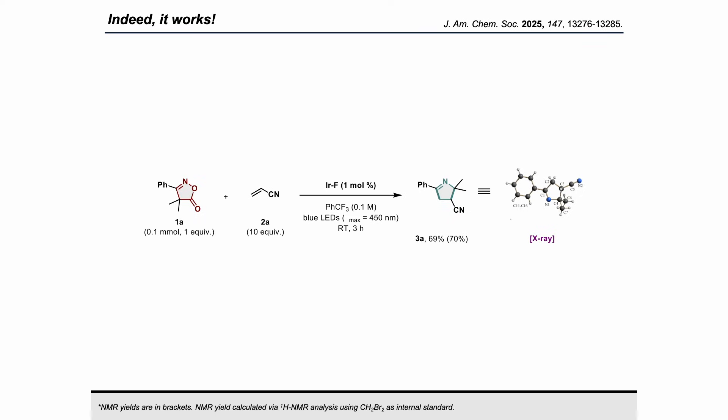When we then tried our substrate in the lab with an excess of acrylonitrile as coupling partner and iridium FS as photosensitizer, we were pleasingly able to form the pyroline-type product in high yield and characterize it via X-ray.